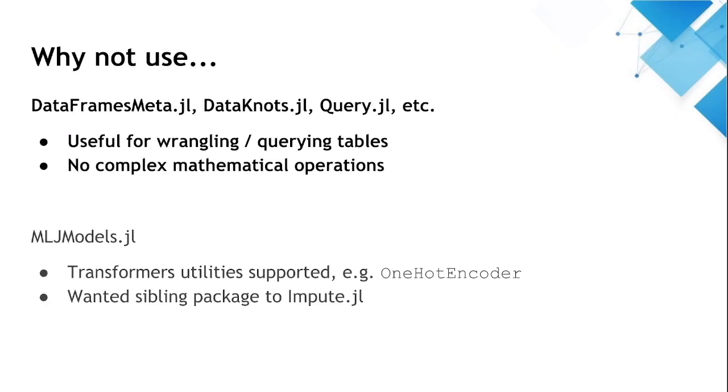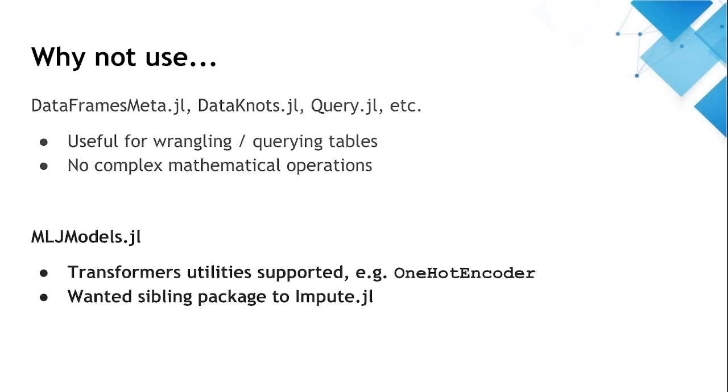Before proceeding to a demo, I thought I'd address why we didn't use or extend existing packages. There are many packages that we've used in the past for table wrangling, such as DataFrames Meta, DataKnots, and Query. However, these packages are more suited to performing relational operations on tables for general purpose wrangling, and they're not particularly well suited to the kinds of mathematical operations we want to use in our pipelines. Similarly, we also considered using MLJ, which provides a transformers mechanism that is an extension of their models interface. But we decided against this because from the outset, we wanted something with an agnostic front end that could be a sibling package to impute.jl and have strong interoperability with our current code base.